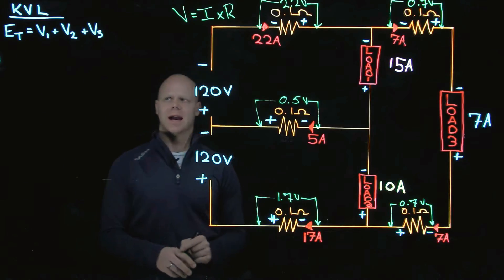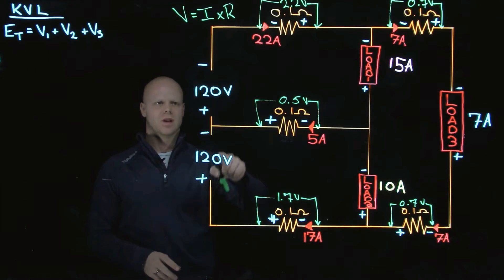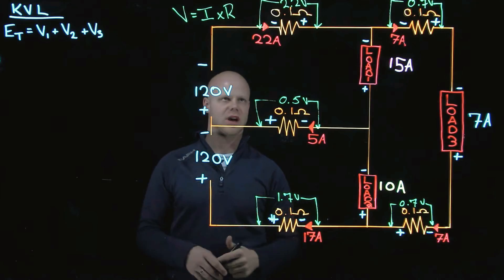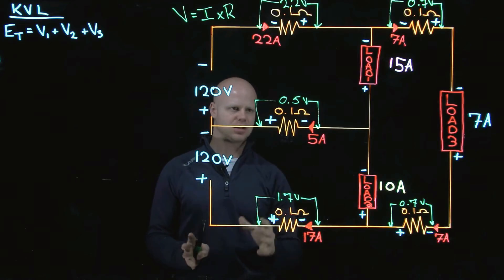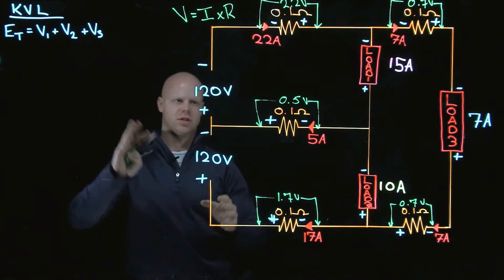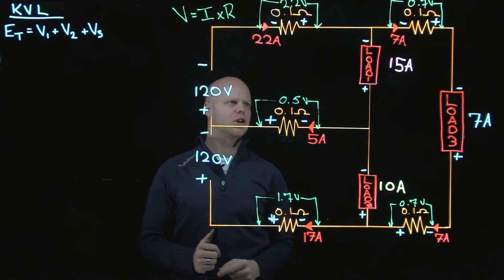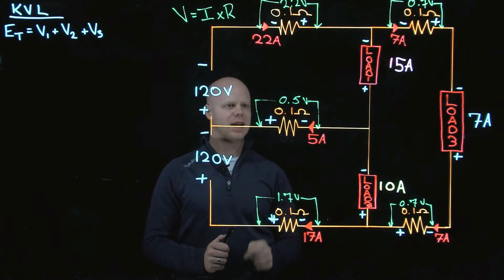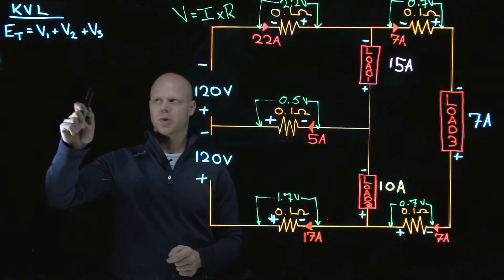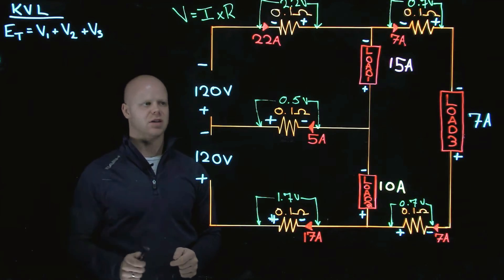So if I look at Kirchhoff's voltage law and how we start within our circuit, how do we actually want to transpose Kirchhoff's voltage law to figure out what the voltage across load 1 is actually going to be? And it's the algebraic sum, so we're adding these values together and paying attention to those negatives.